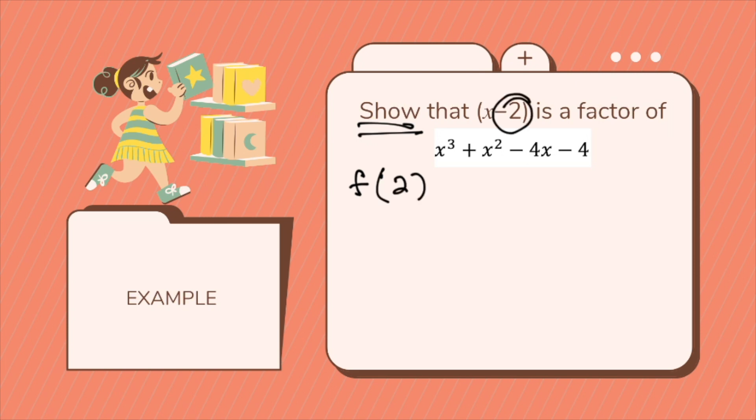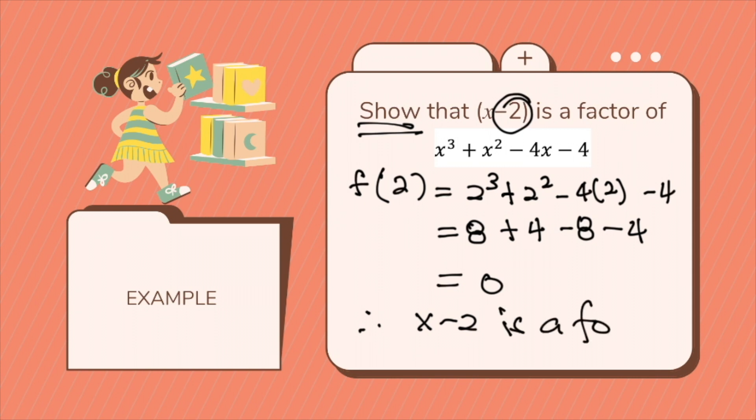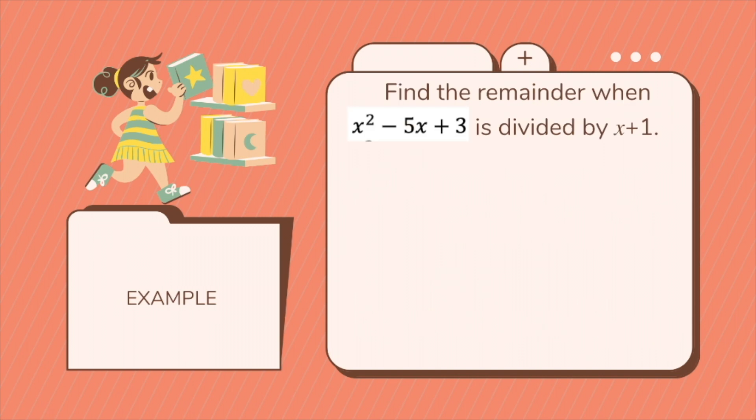So you'll use the opposite sign which is positive 2 equals 2 cubed plus 2 squared minus 4 times 2 minus 4. So this will be 8 plus 4 minus 8 minus 4. So 8 plus 4 minus 8 minus 4 is equal to 0. Therefore, x minus 2 is 1 of the factors.